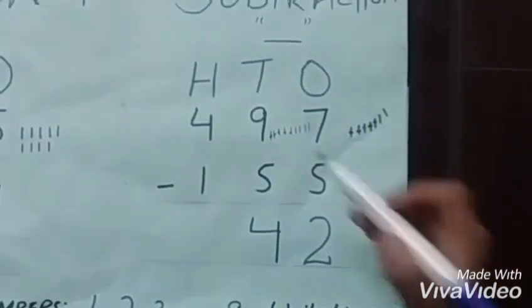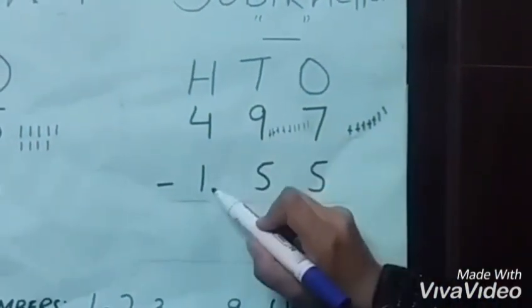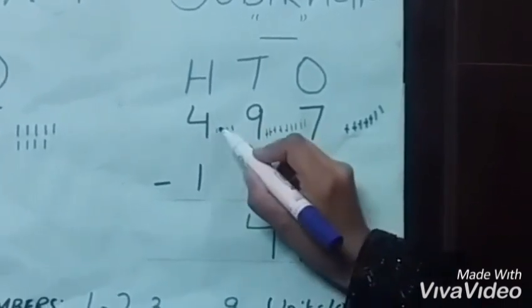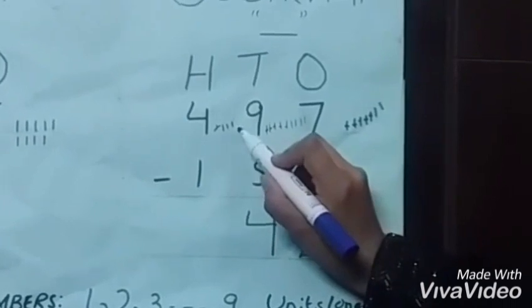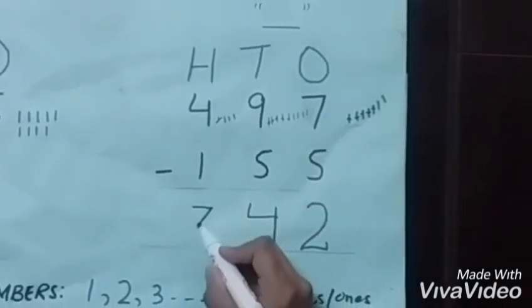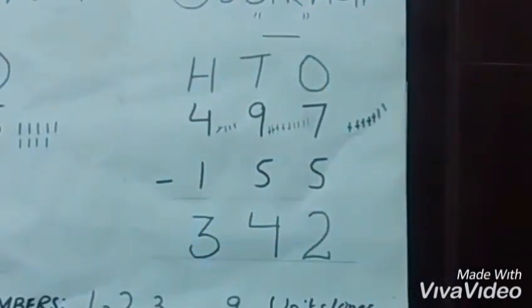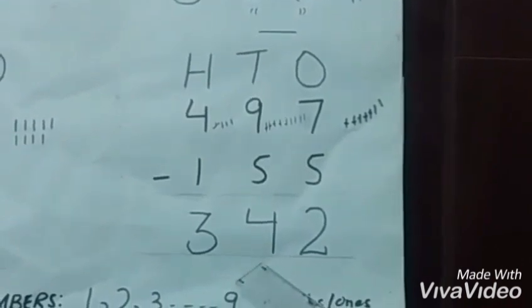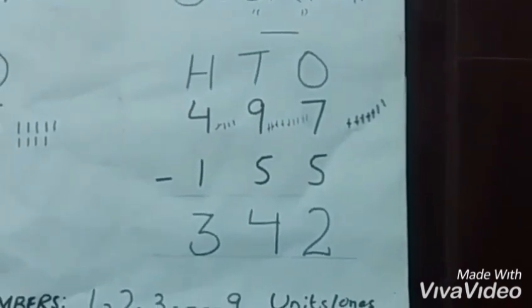Finally, we have four hundreds minus one hundred, which gives us three hundreds. So we get the number 342, which consists of two ones, four tens, and three hundreds.